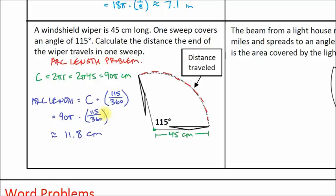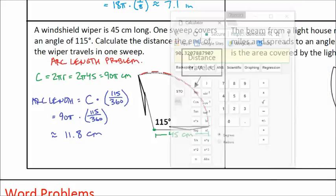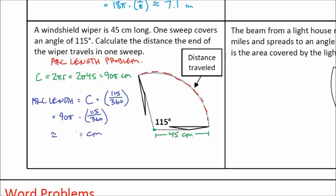Now, that doesn't make sense to me. That seems awful small. Let's do that calculation again. Maybe I hit a button wrong. Let's try again: 90π times 115 divided by 360. Oh, that looks better. Sorry, 90.3. So 90.3 centimeters. Just seems very odd. That was so small. 90.3 centimeters. So if you were going to answer this as a sentence, you would say the distance traveled is about or approximately 90.3 centimeters.